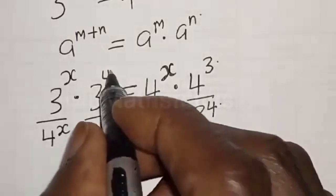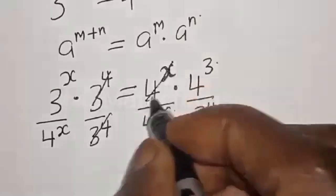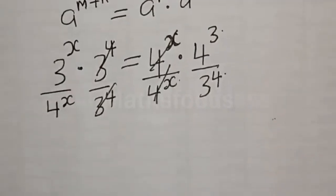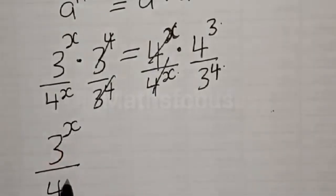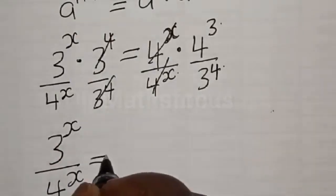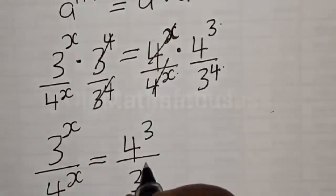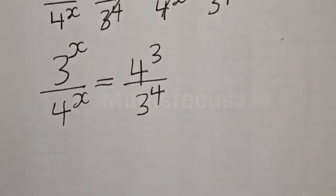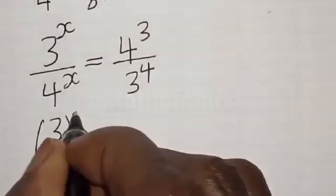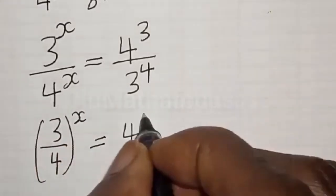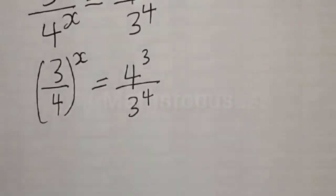Then we can see that 3 raised to the power x divided by 4 raised to the power x is equal to 4 raised to the power 3 divided by 3 raised to the power 4. Now let's take the log of both sides.